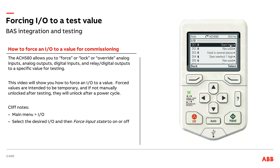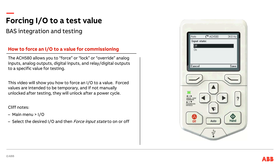Digital input 1 is programmed for start/stop. What I want to do is force that to be on. So I'm going to come in here, select the box for forced input state, and edit that. Behind me I have a demo case I just turned on — it's in auto mode. With an auto speed command of 34 hertz right now, it is now running.